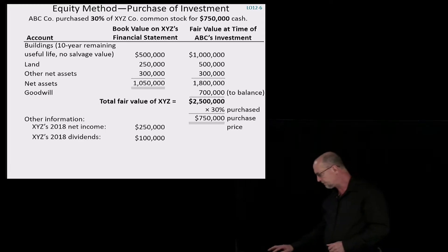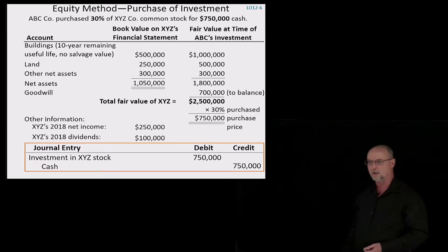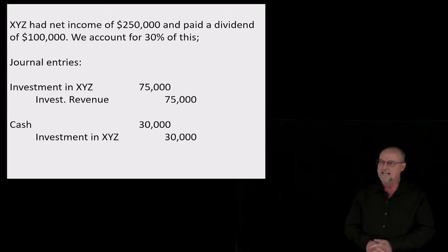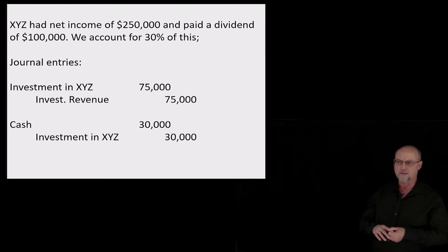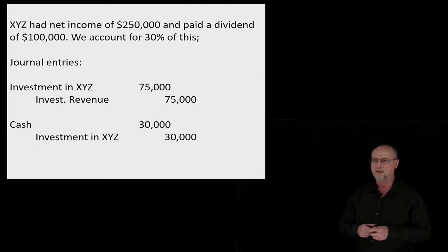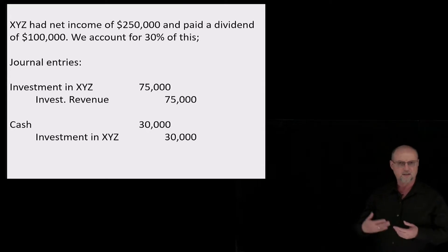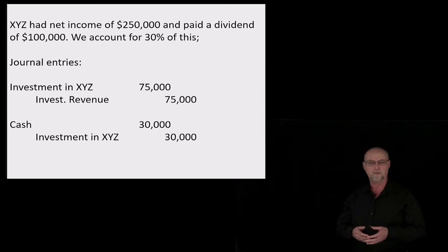The difference between the fair value of net assets — $1,800,000 — and the total fair value of the company of $2.5 million implies goodwill of $700,000. So when we made the investment, it was based on 30% of $2.5 million, which is how we came up with the $750,000 price tag. The initial journal entry: debit investment $750,000, credit cash. We debit the investment account — we do not record accounts receivable, inventory, land, buildings, or any liabilities.